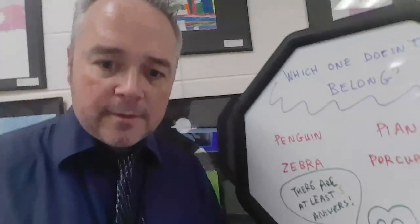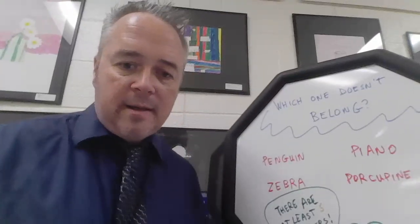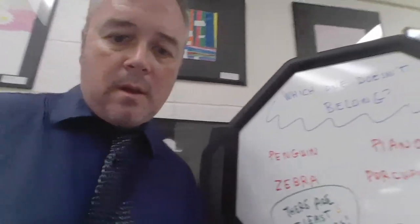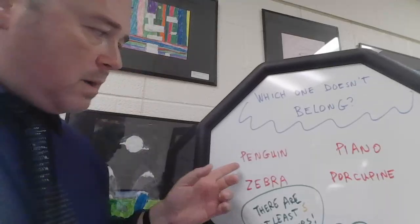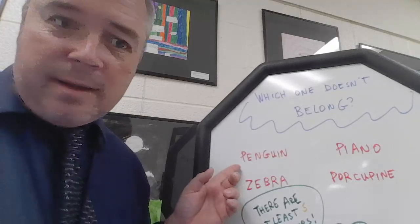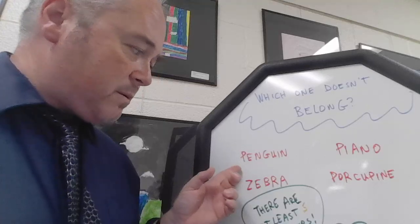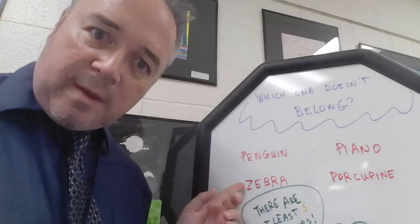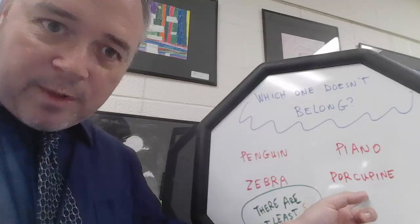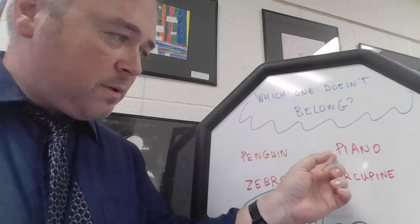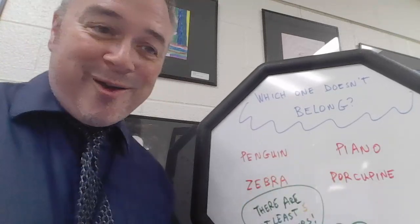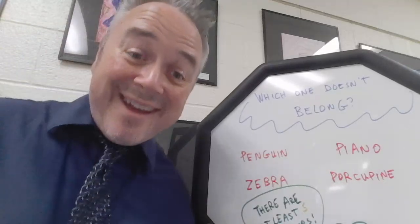Another strategy is to think about what the word means. A penguin is a kind of bird — it's a type of animal. A zebra is a type of animal. A porcupine is a type of animal. Is a piano a type of animal? No, it's not. So piano doesn't belong because it's not an animal.